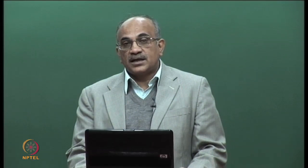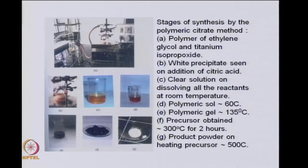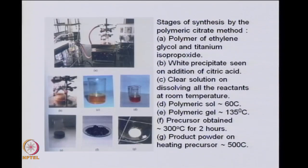The two processes very important are hydrolysis and condensation. This can be shown in various stages, for example in the polymeric citrate method, where we are making a nanostructured material through a route involving polymerization. It is called the polymeric citrate method because we use citric acid to help in polymerizing.